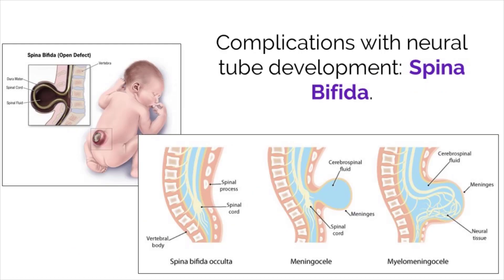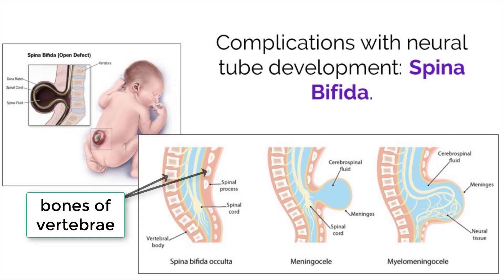The body protects the developing neural tube, which turns into the brain and spinal cord, by placing hard bones around it. These bones develop separately and at different times, making up most of the skull and the vertebrae.